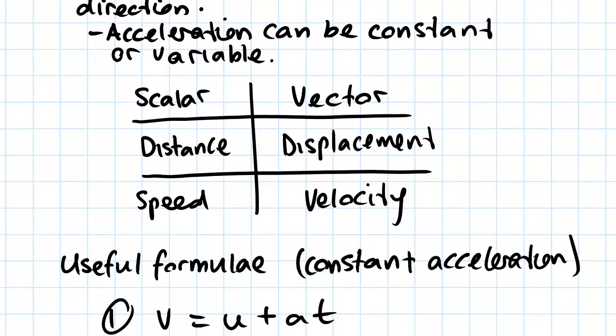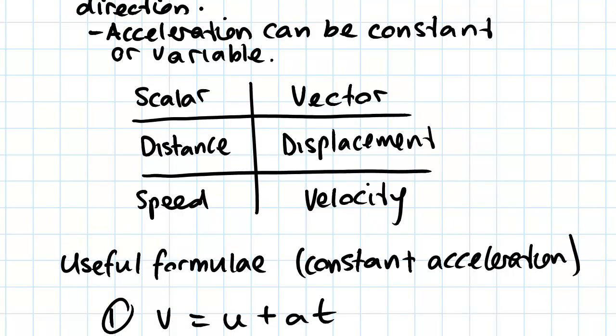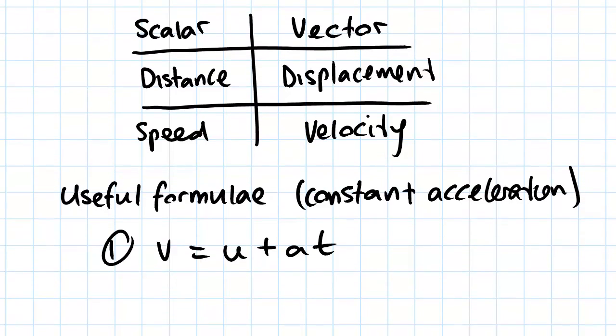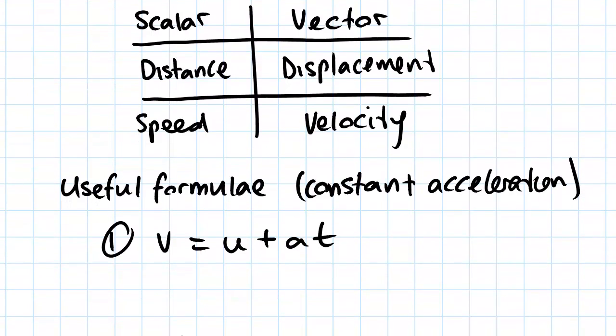Some useful formulae for working out rectilinear motion problems are the following. So our first equation we're going to look at is this one. This one basically tells us that v, so this v stands for final velocity and it's equal to u which is initial velocity.